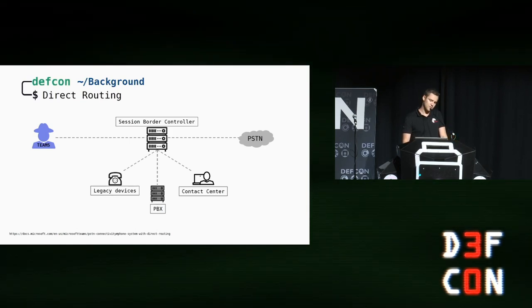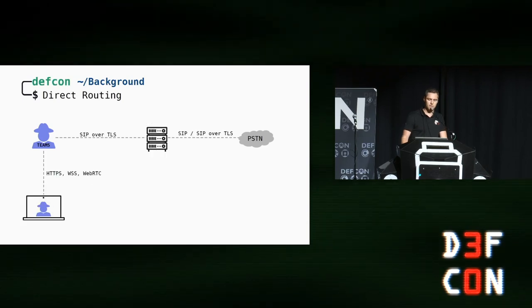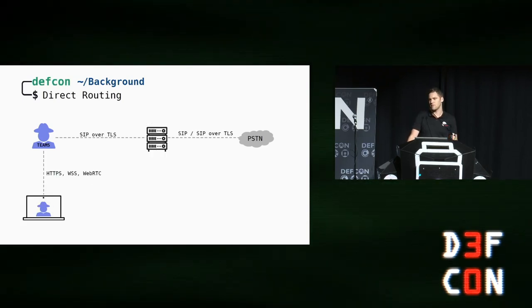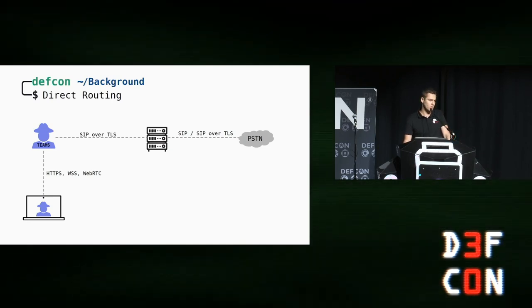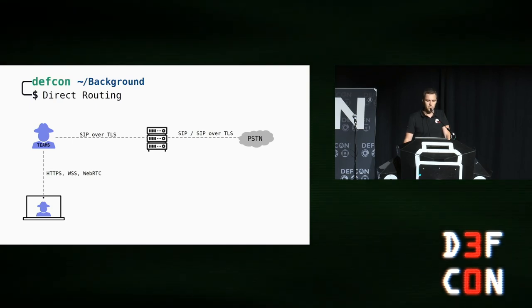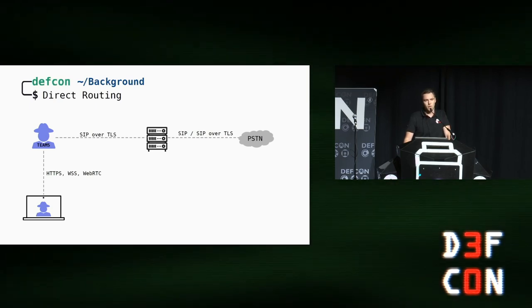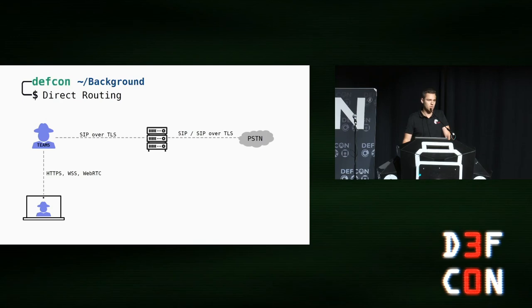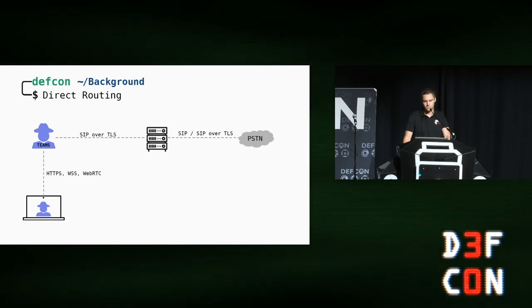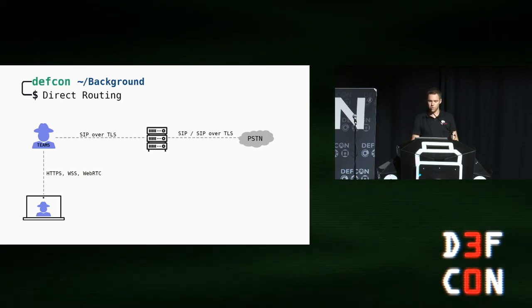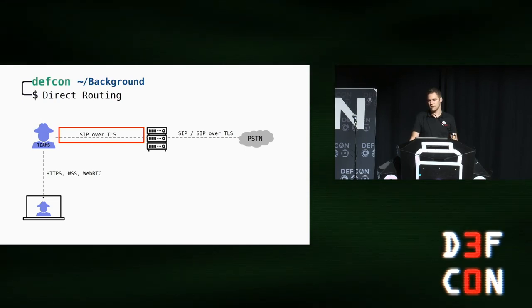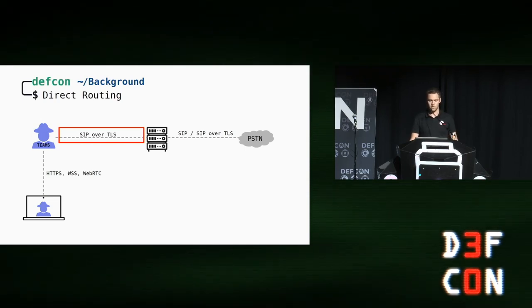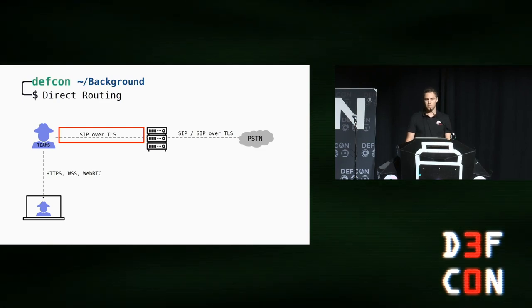The communication between the Microsoft Teams client and the backend is done with HTTPS, secure web sockets, and web RTC. The communication between the Microsoft Teams proxies and the SBC is done with the Session Initiation Protocol, which is also the most commonly used protocol by telephone providers. In this talk, we focus on the communication between the Microsoft Teams proxies and the SBC.